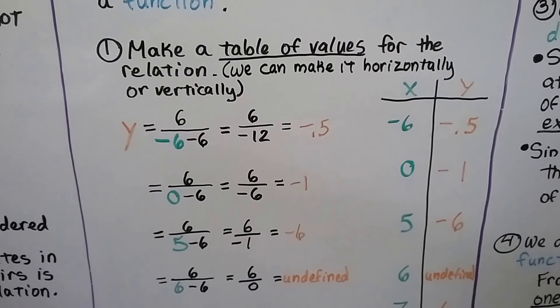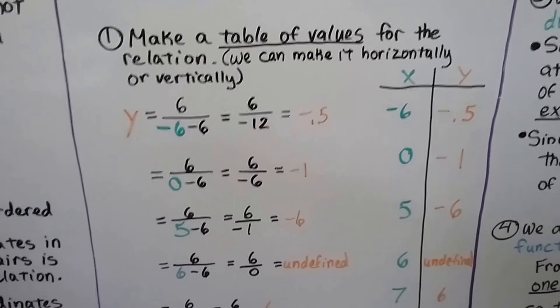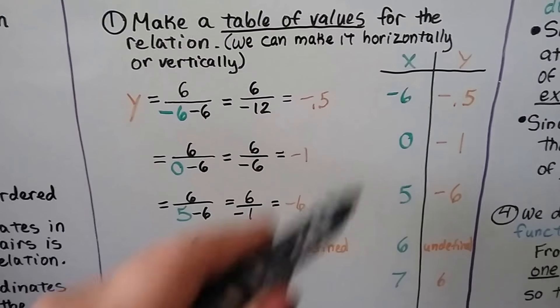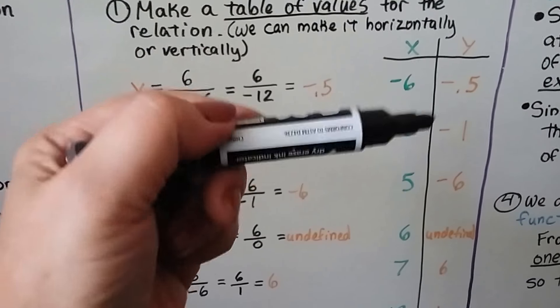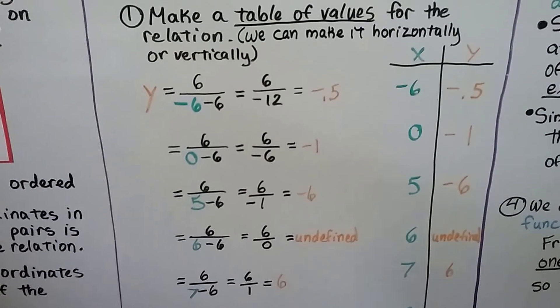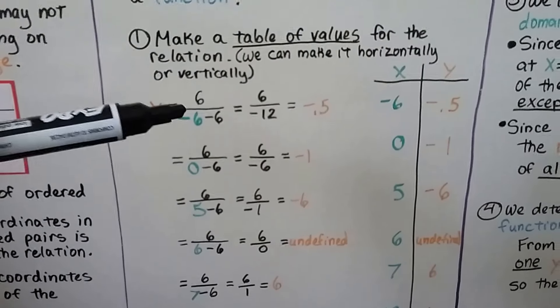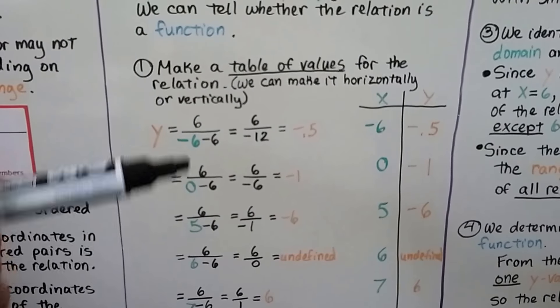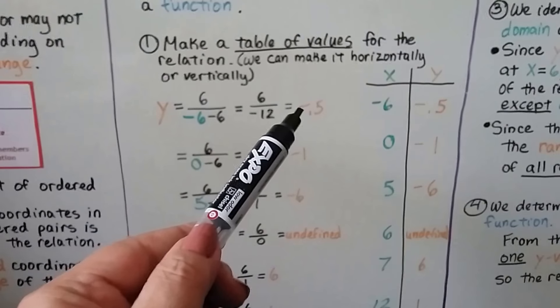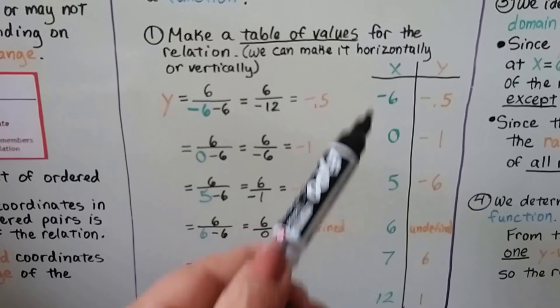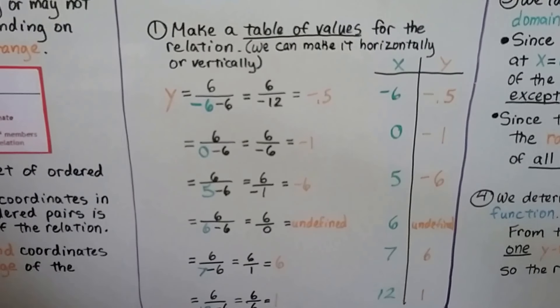First thing we do is make a table of values for the relation. We can make it horizontally or vertically. I like to do it vertically because then I can see each ordered pair. So we substitute in some values for what x could be and we find out what y is and we make our ordered pairs.